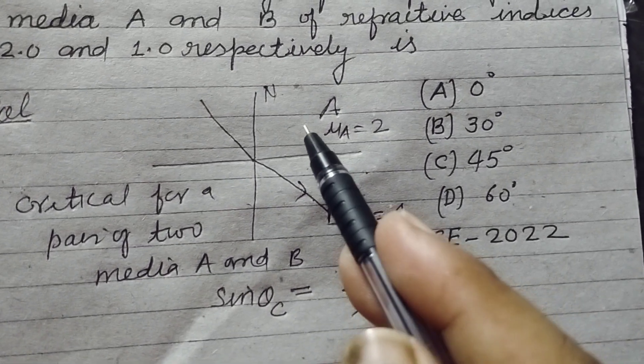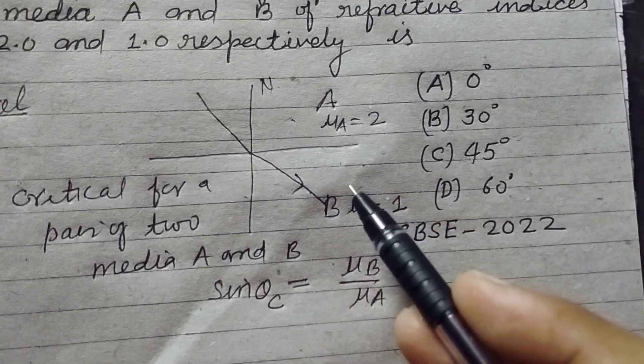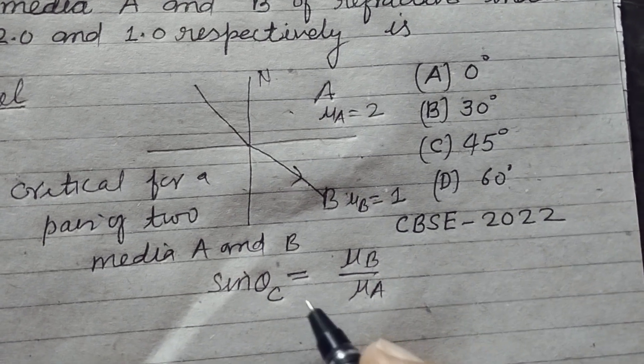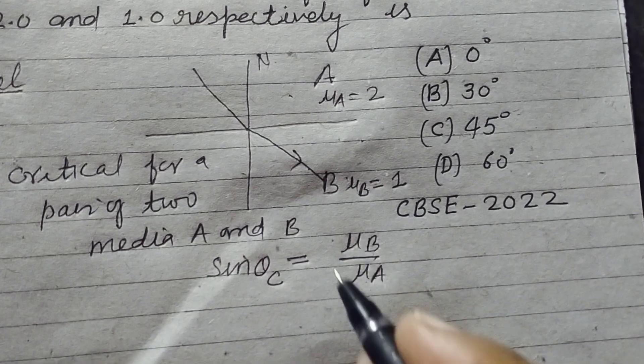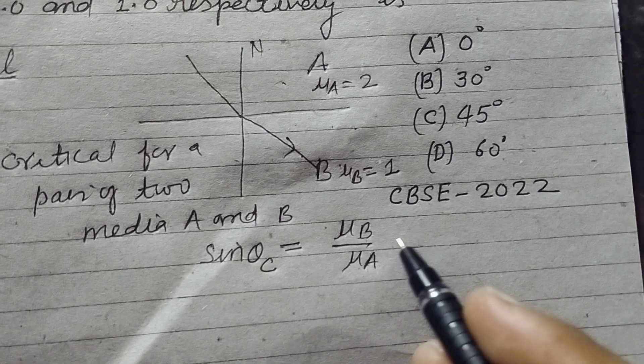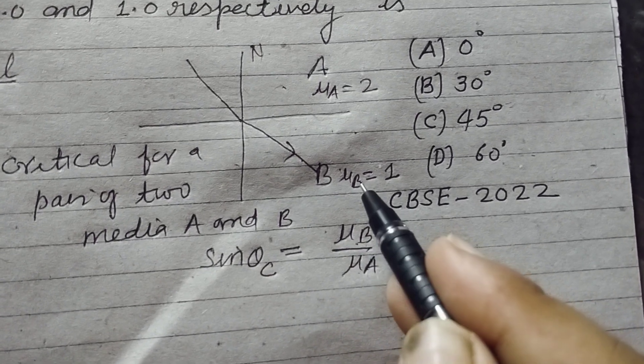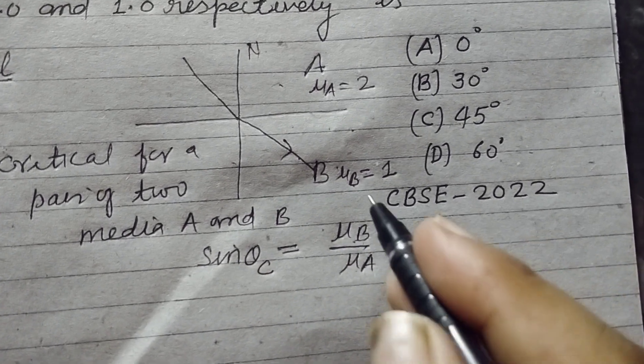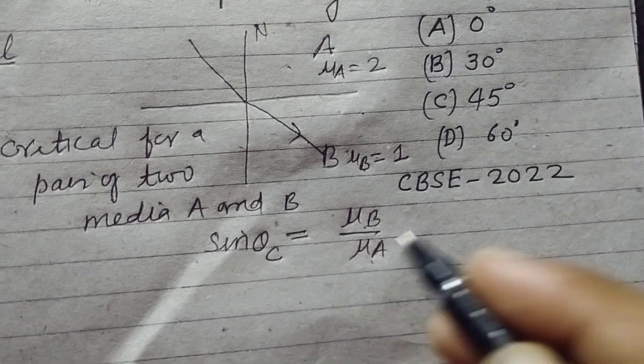When light passes from one medium to another medium, the sine of the critical angle equals the refractive index of the second medium upon the refractive index of the first medium.